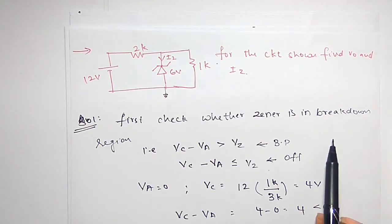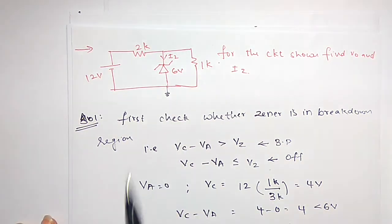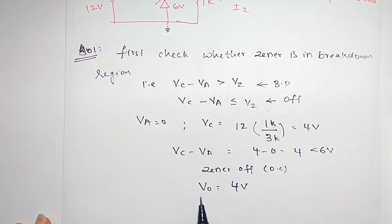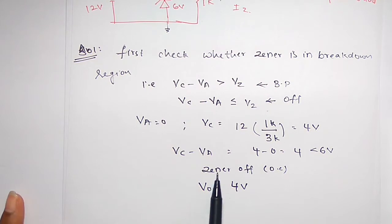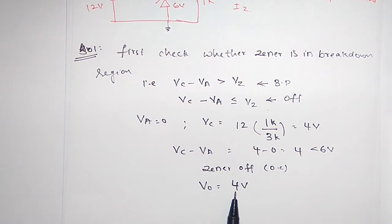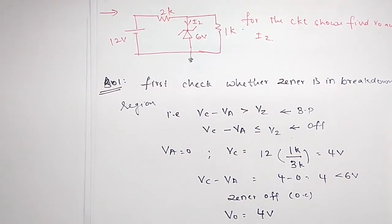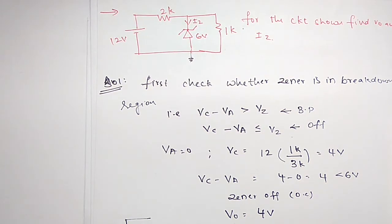If we didn't check this condition, we would simply write that output voltage equals Zener voltage, which is 6 volts, but that is not correct. That's why you have to check whether the Zener is in breakdown region or not. As the Zener is not in breakdown region, it is in off state. Therefore, V0 is the output voltage across the 1 kilo ohm.